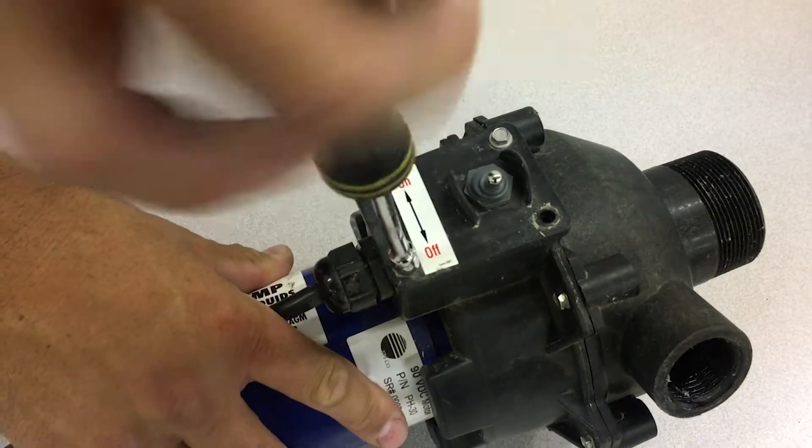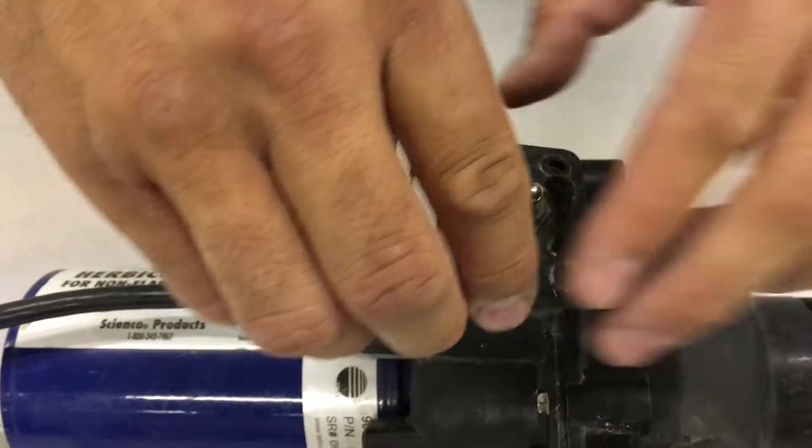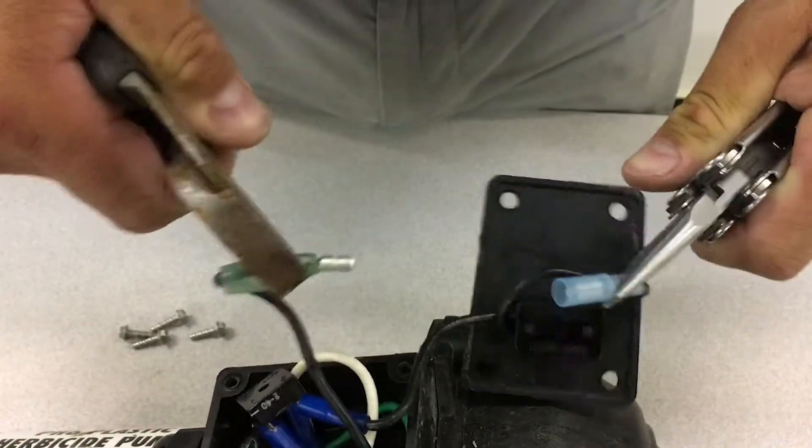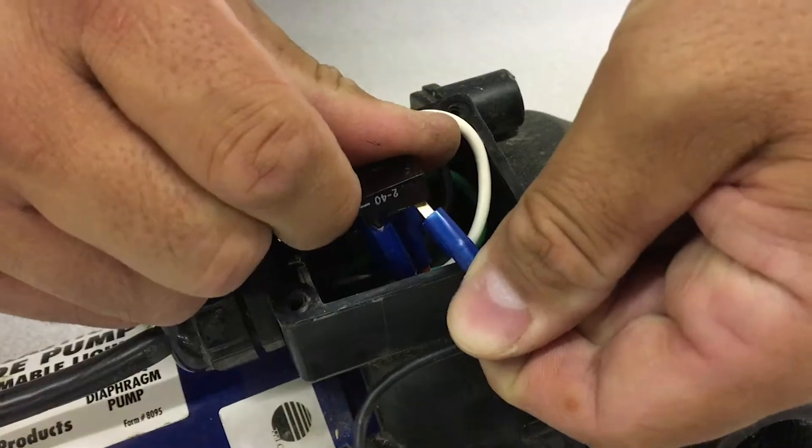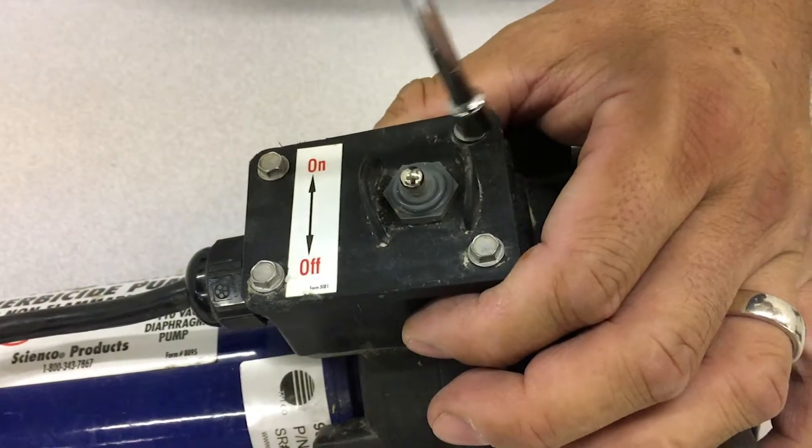First, if you need to replace the on-off switch, unscrew the four screws that hold it to the pump, pull off the faceplate and detach the two wires that connect it to the pump. Reattach the wires and screw the new on-off switch in place to reassemble that part of the pump.